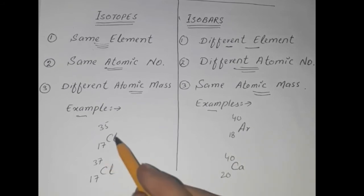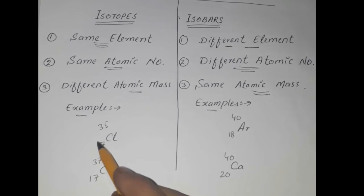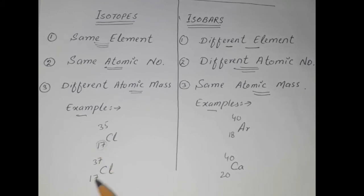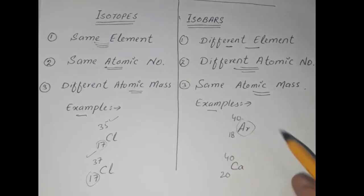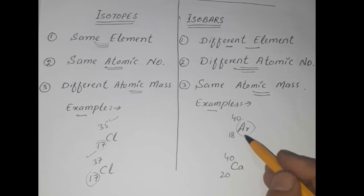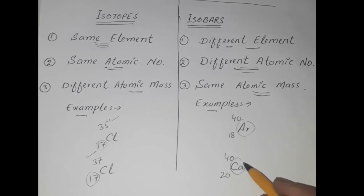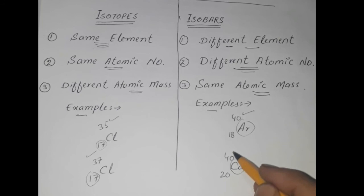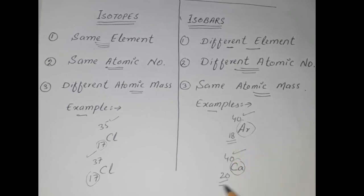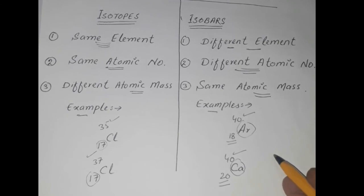In summary: for isotopes, atoms are of the same element with the same atomic number but different atomic mass. For isobars, atoms are of different elements — like Argon and Calcium — with the same atomic mass but different atomic numbers.